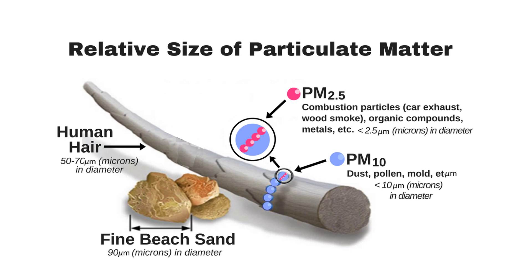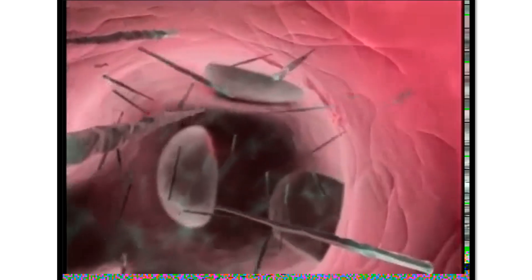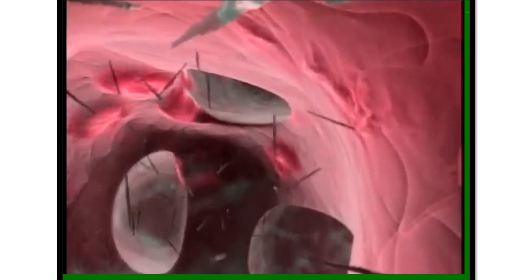But an even smaller fraction, those less than 2.5 micron diameter, are even more dangerous. We call this fraction PM2.5. They're less than 1/25th the diameter of a hair, and are comprised of mostly combustion products. PM2.5 easily makes its way into the lungs and penetrates the gas exchange regions, or alveoli, causing inflammation. It's here that these tiniest particles cause the most adverse health effects attributed to air pollution.